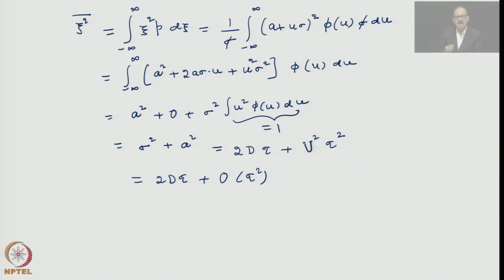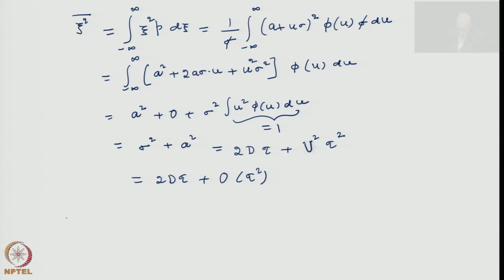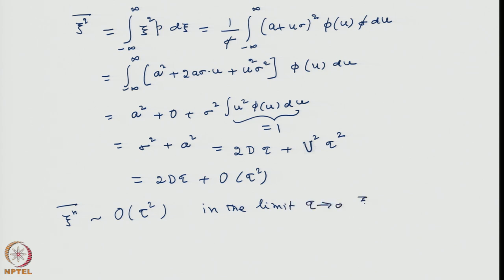We can similarly show that higher order moments — xi-to-the-power-n bar for all n greater than or equal to 3 — are at least of order tau-squared or higher. Hence in the limit as tau tends to 0, xi-to-the-power-n bar divided by tau will tend to 0, while the lower-order coefficients survive.